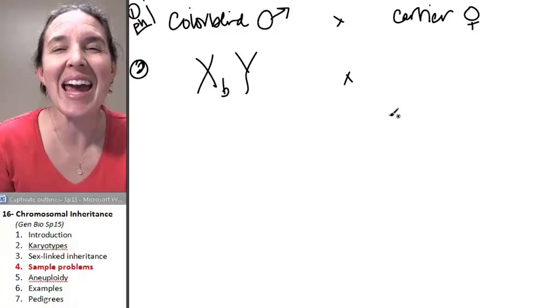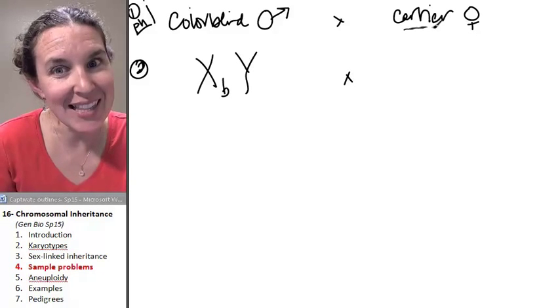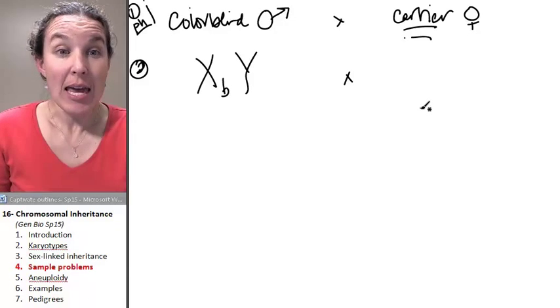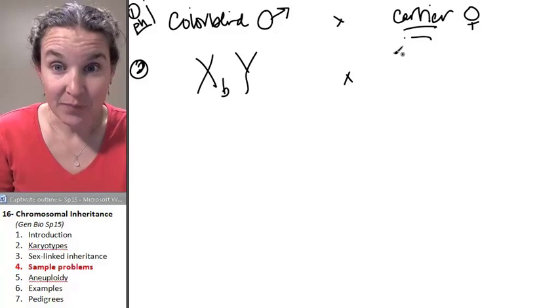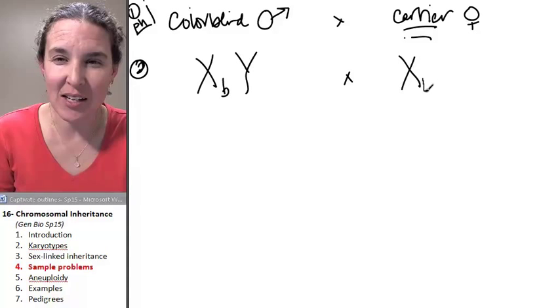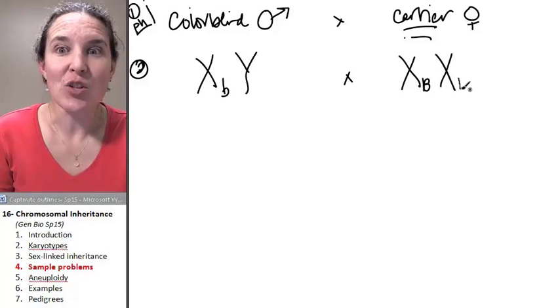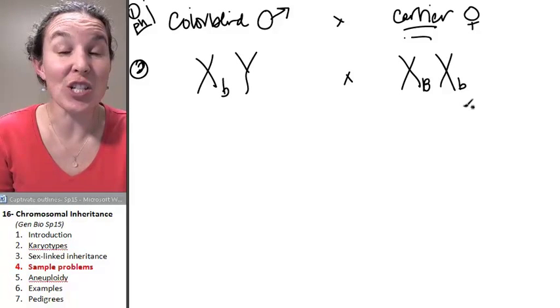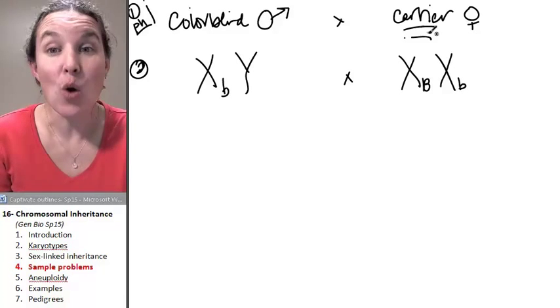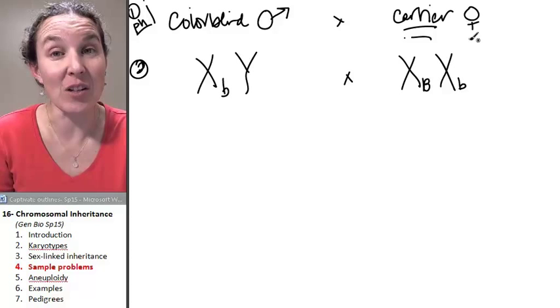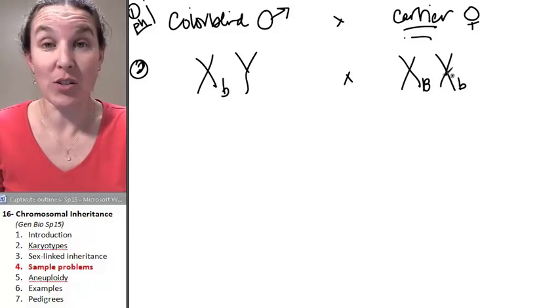How about the carrier lady? What does that tell you? If she's a carrier, it means that she doesn't express it. She's got two Xs, but she's a carrier, so she's actually heterozygous. We could have said she's a heterozygous female, but we can also call her a carrier.